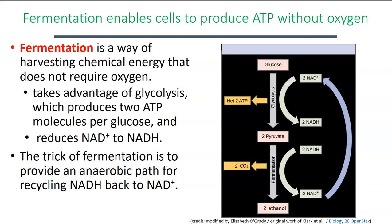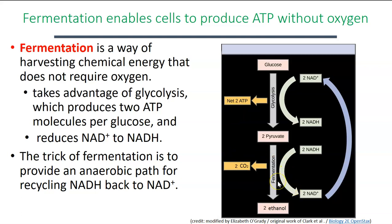In the absence of oxygen, if we follow glycolysis with a process called fermentation — which does not require oxygen — we can continue to do glycolysis and yield small amounts of ATP. Fermentation can follow glycolysis as a way for cells to continue harvesting chemical energy even when there is no oxygen or very low levels of oxygen present.